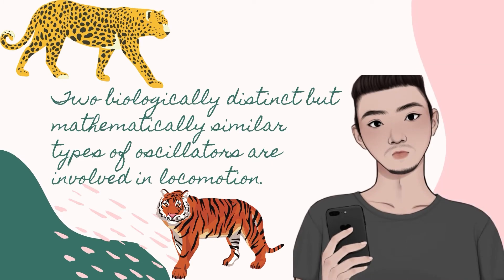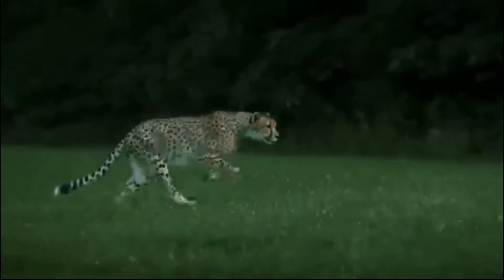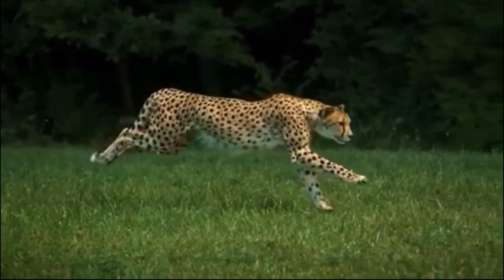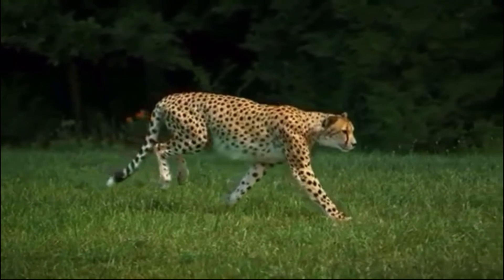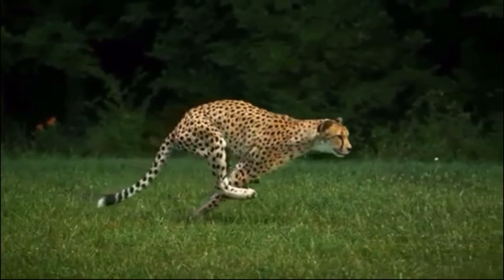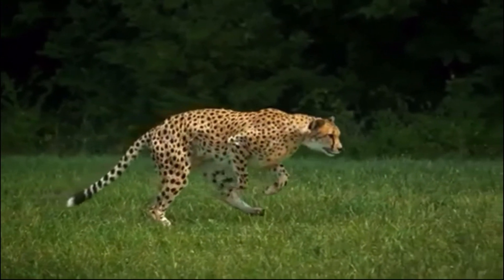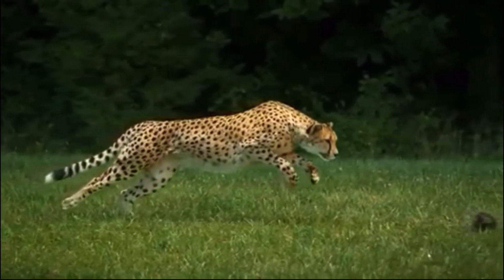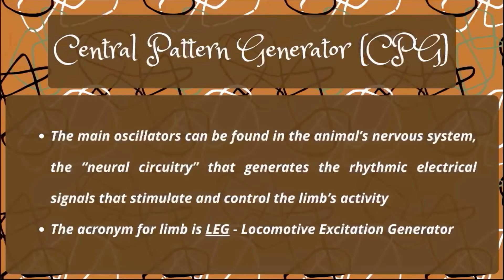Two biologically distinct but mathematically similar types of oscillators are involved in locomotion. For example, animals' limbs, especially those of mammals, can be thought of as mechanical systems — linked assemblies of bones, pivoting at the joints, pulled this way and that by the contracting muscles in their internal systems. The main oscillators can be found in the animal's nervous system, the neural circuitry that generates the rhythmic electrical signals that stimulate and control the limb's activity. Biologists call it the CPG, or the Central Pattern Generator, whereas the acronym for LIMB is LEG, which stands for Locomotive Excitation Generator.